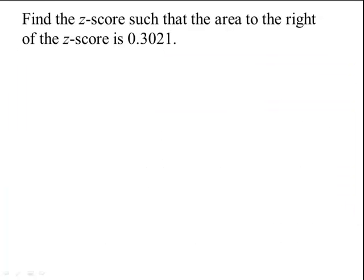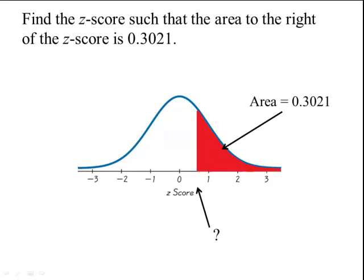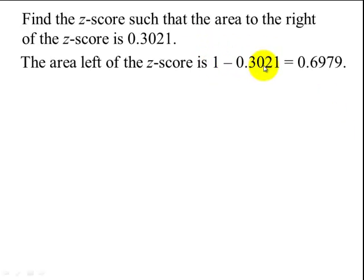Let's look at another example. Find the z-score such that the area to the right of the z-score is 0.3021. Let's draw a picture. This will produce a positive z because the area to the right of 0 is 0.5, and 0.3021 is smaller than 0.5, so it has to be a positive z. In order to use Table 5 we must compute the area to the left of this z-score, so we do 1 minus 0.3021, because Table 5 gives us area to the left.